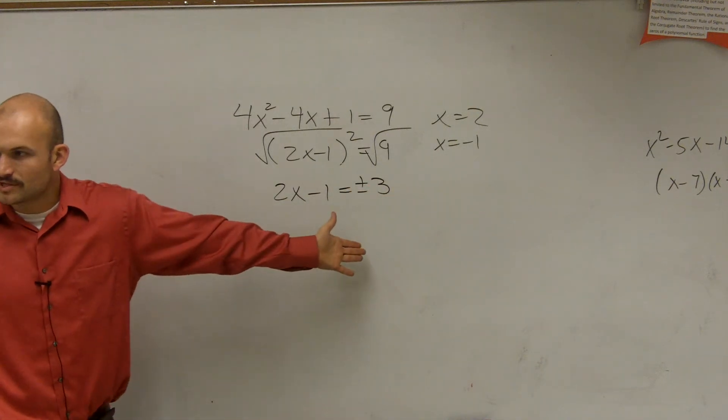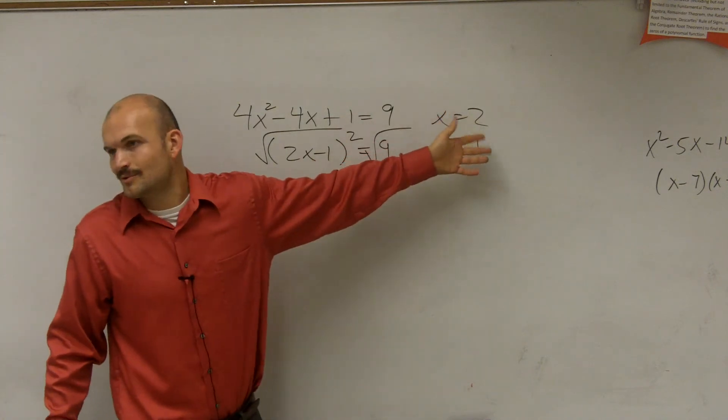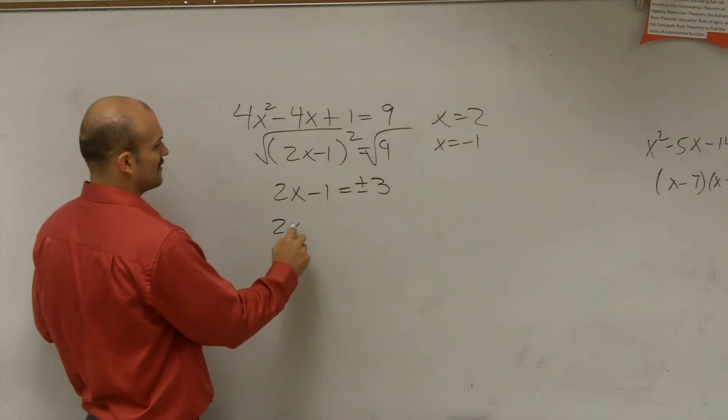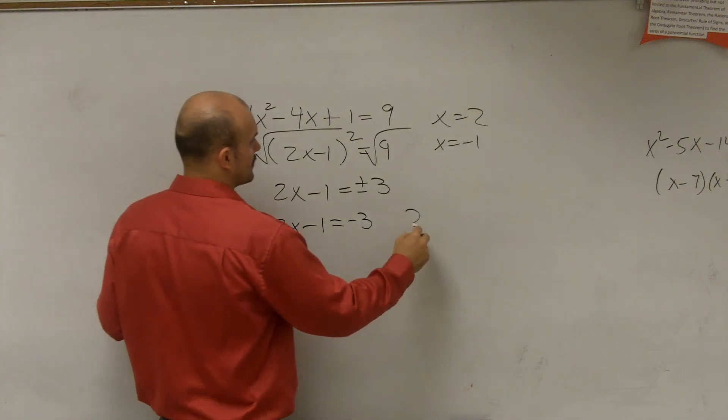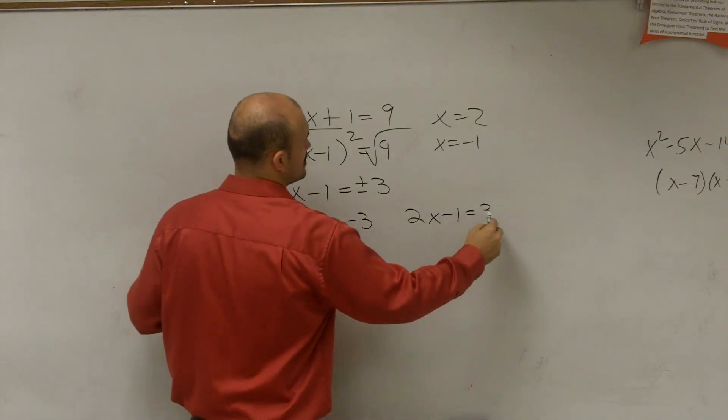So then, once you have plus or minus 3, we already know I kind of did the problem twice. But we already know what you'll do is, I'll just set it up differently. I'll do 2x minus 1 equals negative 3, and 2x minus 1 equals positive 3.